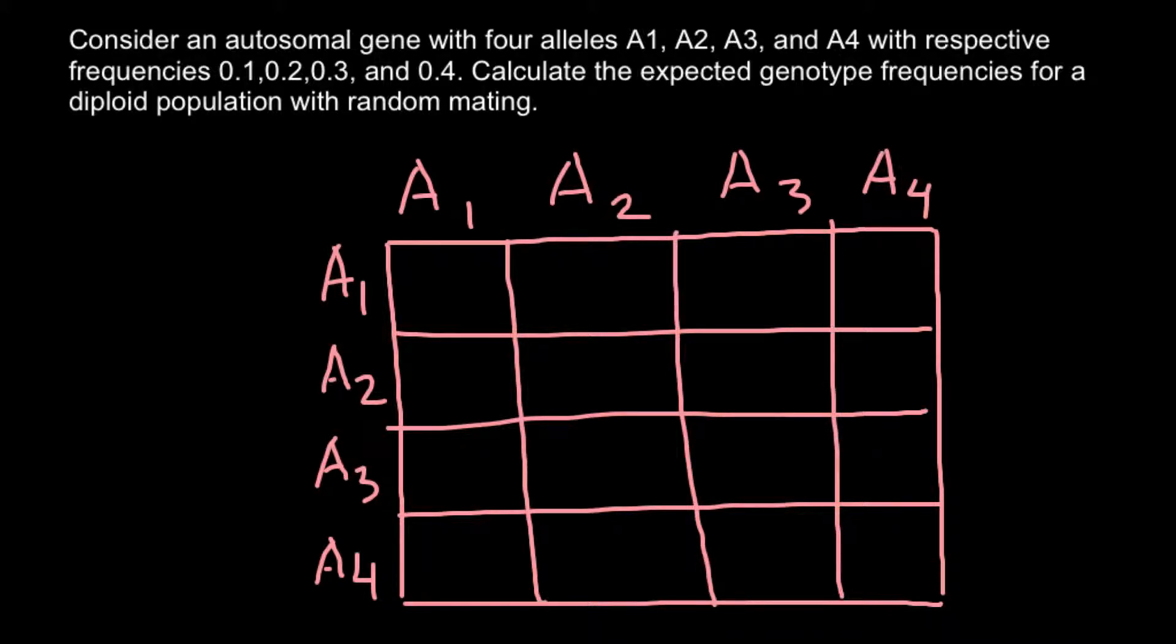In order to solve this problem, we have to list frequencies of each allele. For example, frequency of the allele A1 is 0.1, so this is going to be 0.1 here. Frequency of the A2 allele would be 0.2, so 0.2 here.